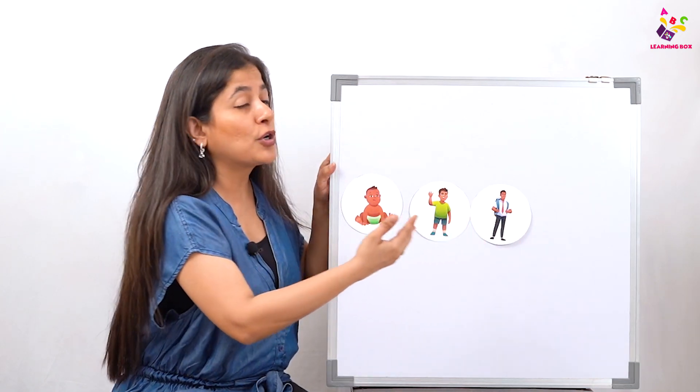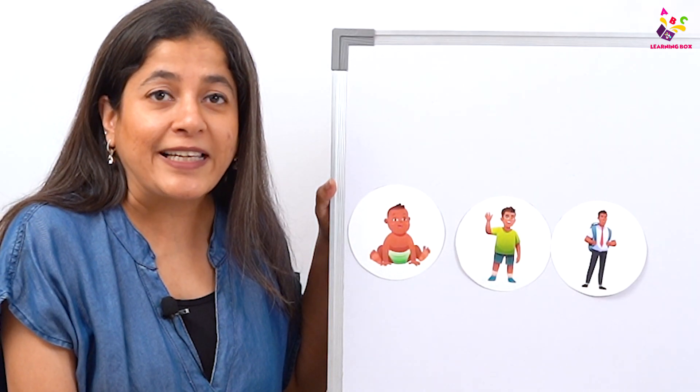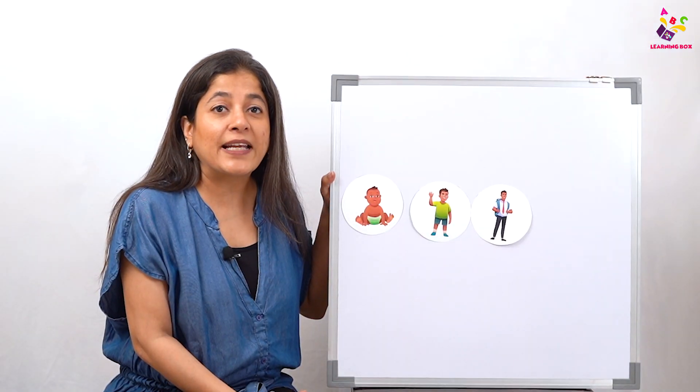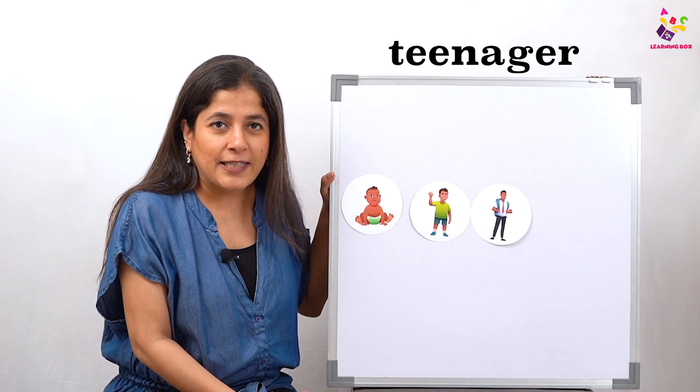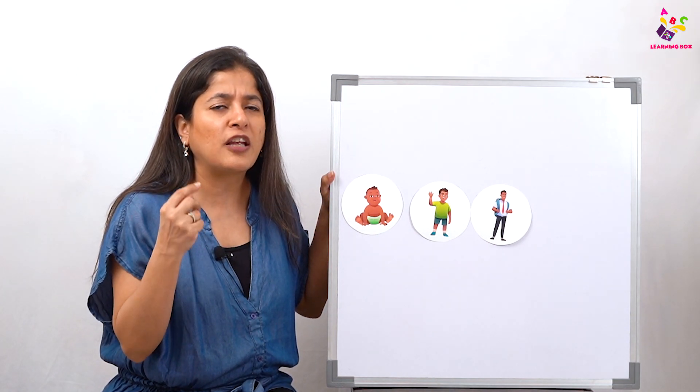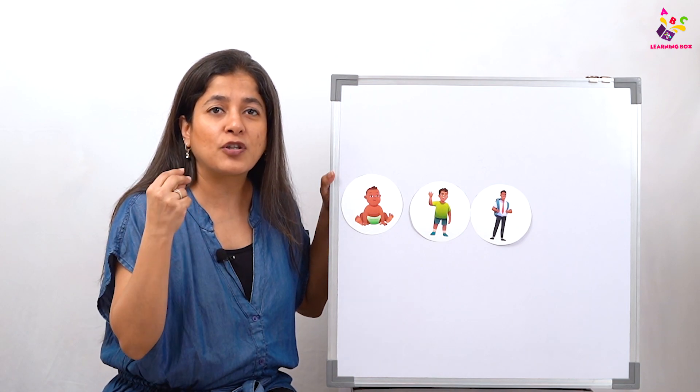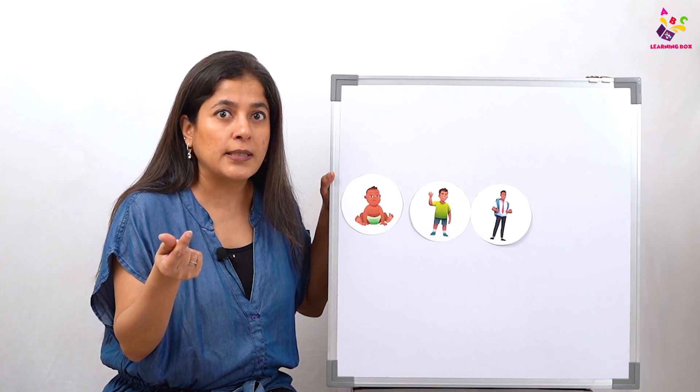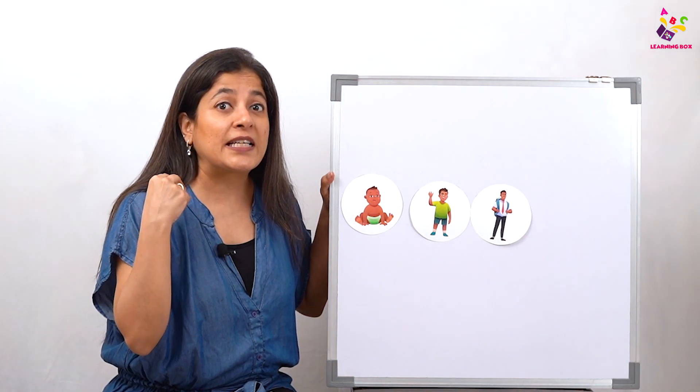After that, gradually we grow up even more and start going to college. At that time we enter our teens and become a teenager. Till the age of 12 we are not a teenager. Let's count quickly: 1, 2, 3, 4, 5, 6, 7, 8, 9, 10, 11, 12. Did you hear the sound 'teen'? No. But when we say 13, 14, we hear 'teen'. So right from 13 we become teenagers.